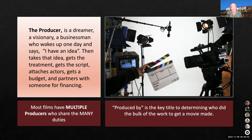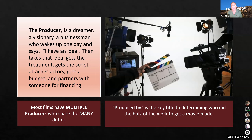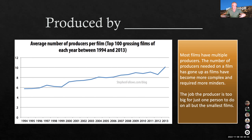Most films have multiple producers because there's so much work that it makes much more sense to have more than one. "Produced by" is the key title to determine who did the bulk of the work to get a movie made. The average number of producers for films has been going up, as projects become more complex with CGI and other elements. Sometimes there's a hierarchy within producers, and sometimes they're all equals combining their talents to make the film.